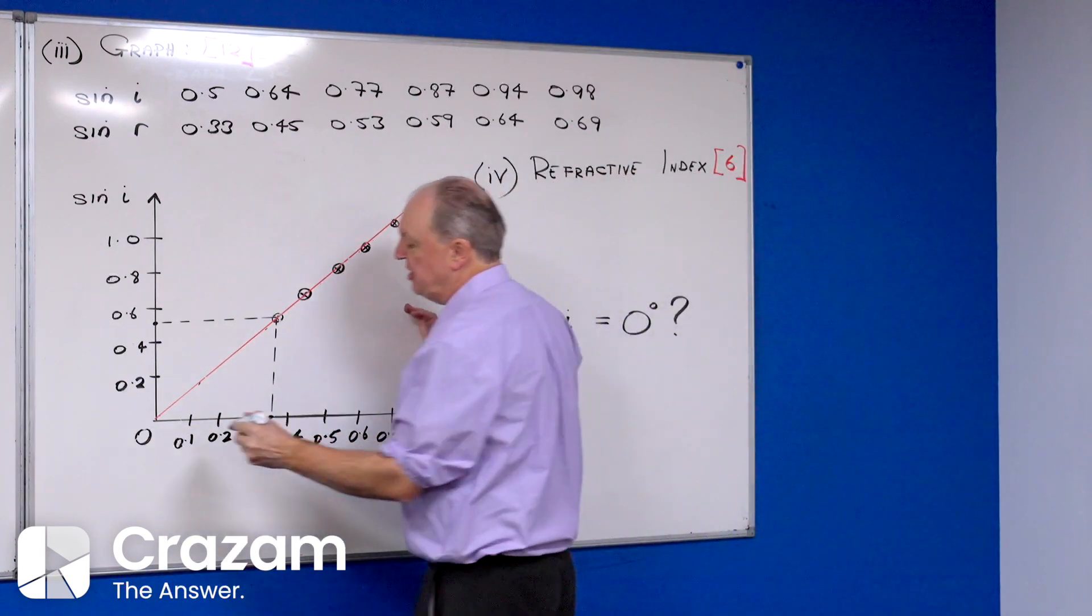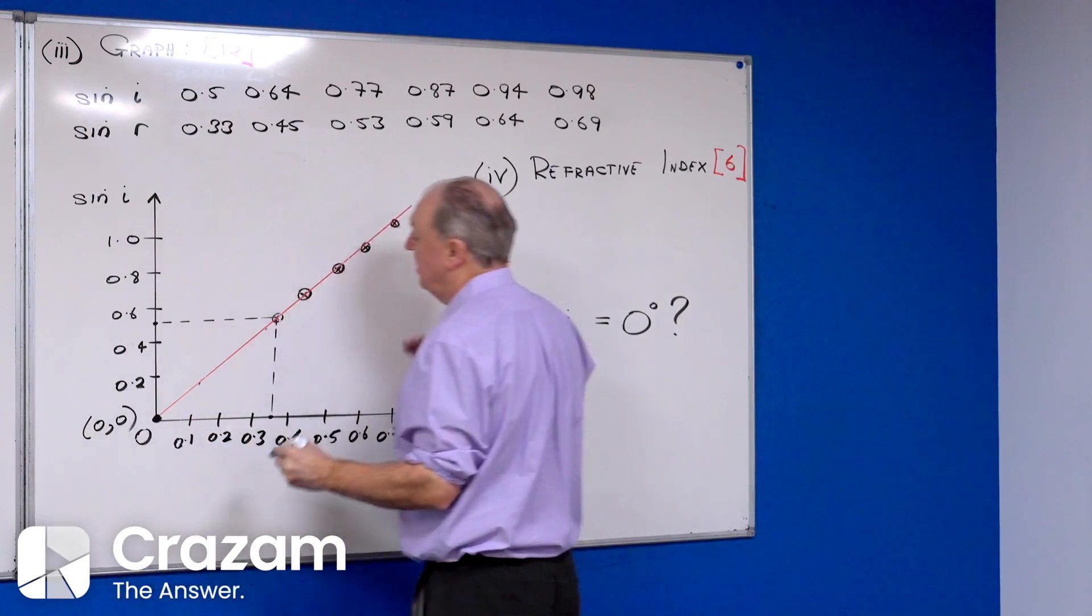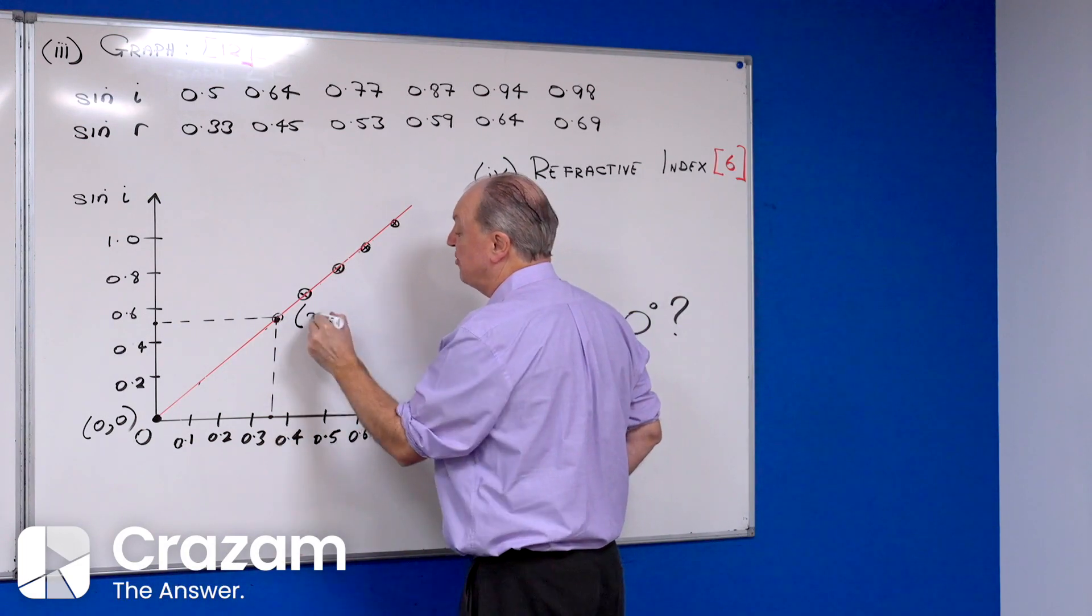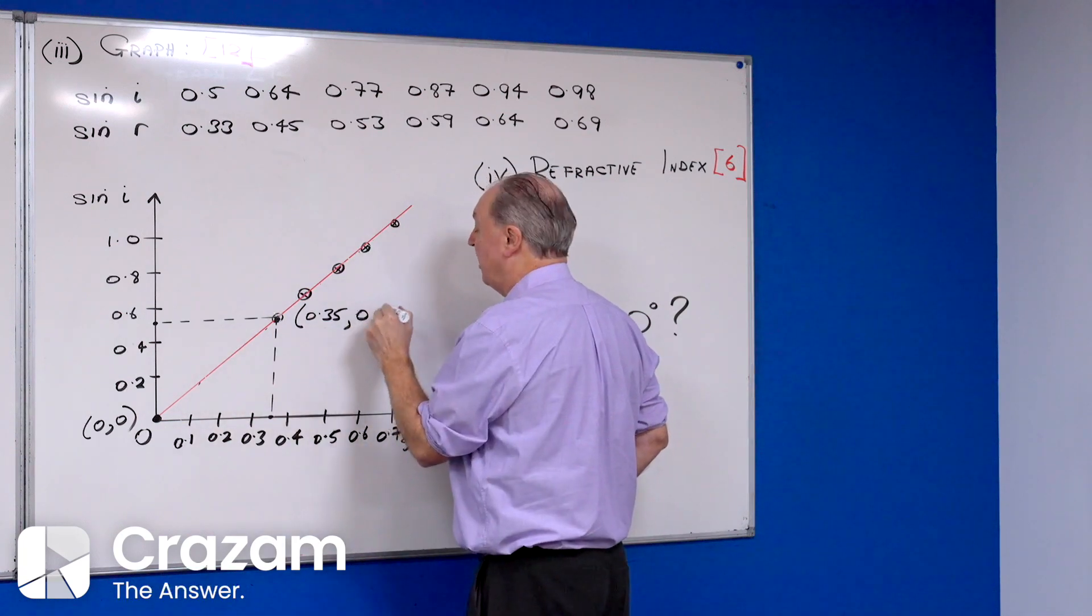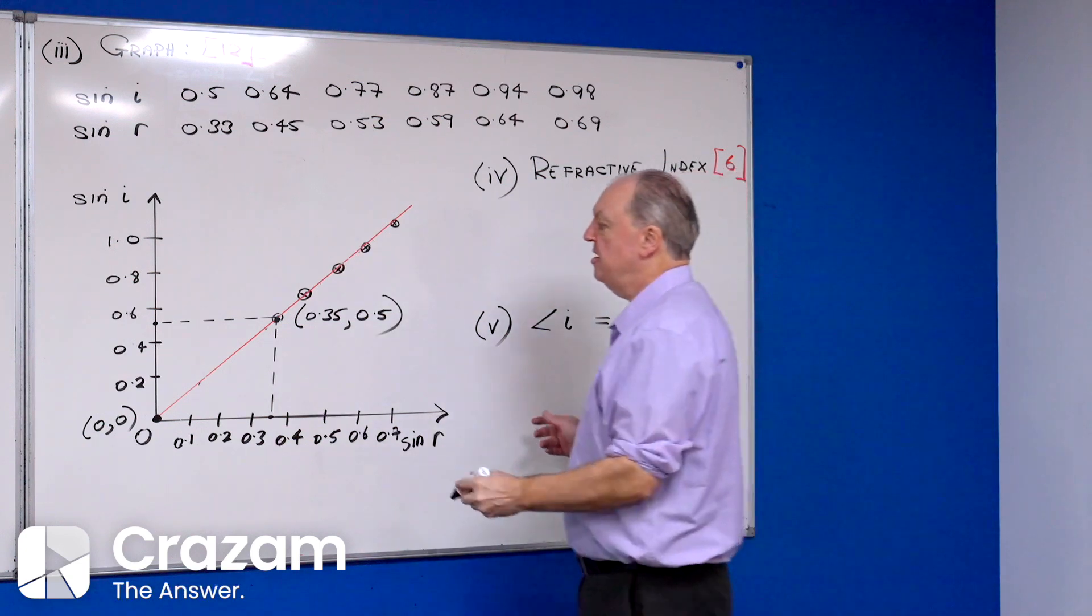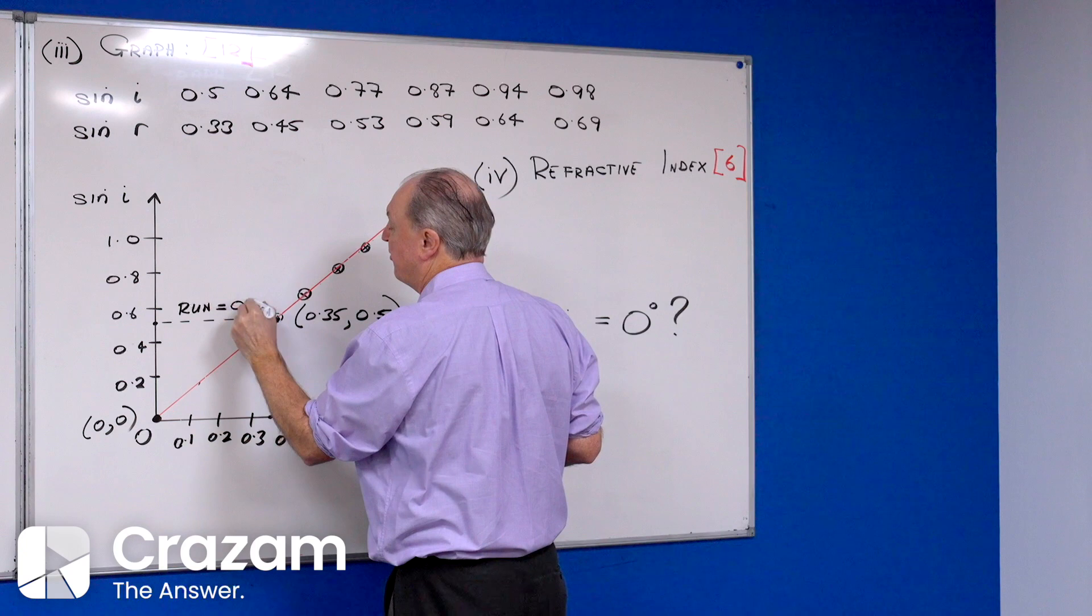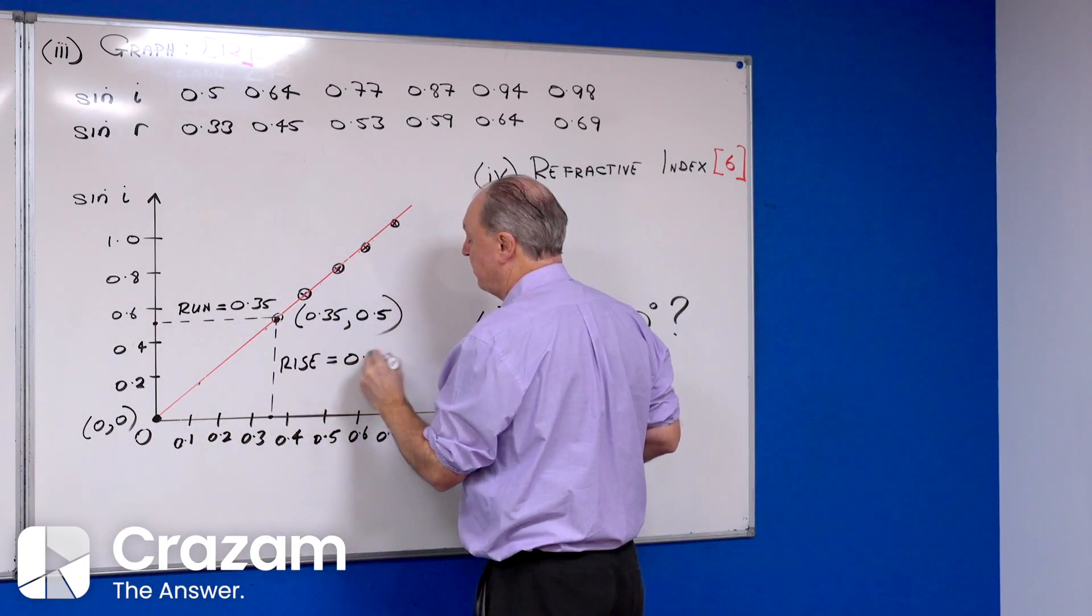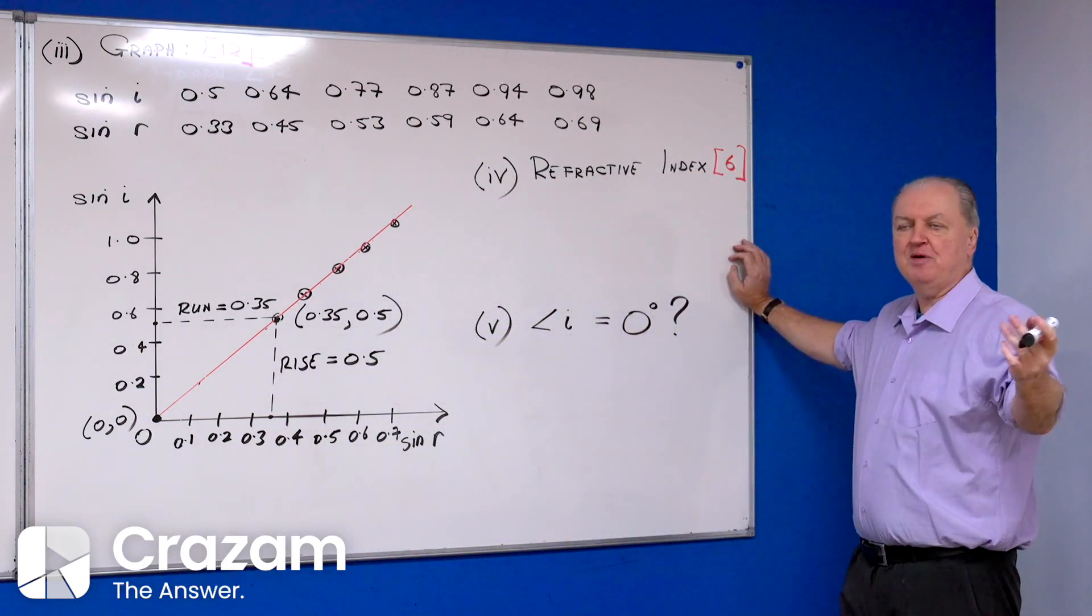When you find the slope, you want to show very clearly that you're choosing two points. One of the points I'll always choose is the origin, so mark in the origin. This point here will be 0.35 and 0.5. We call that the rise and the run. The run is how far you go out, 0.35, and the rise is 0.5.